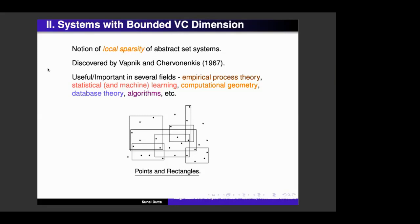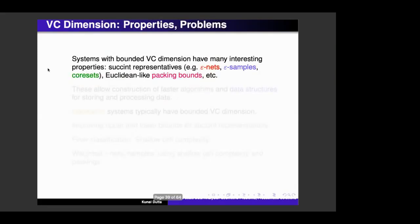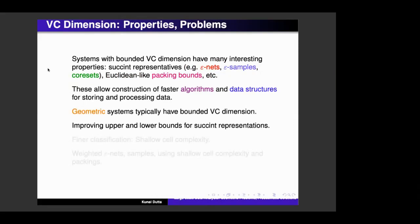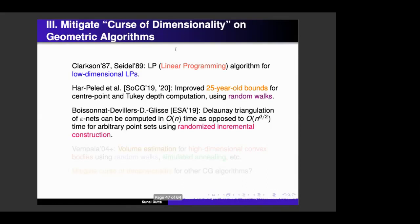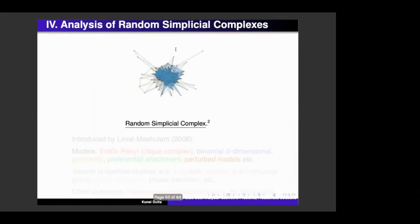Then there are a few other directions like systems with bounded VC dimensions. Okay, so there are several other directions, like for systems of bounded VC dimension, here again, there are several questions that one can ask, so I don't have time, I guess. Then, but yes, so geometric systems typically have bounded VC dimension, and there are several interesting questions that can be asked there. And the third aspect is about mitigating the curse of dimensionality on geometric algorithms, and finally, the one where I mentioned about typical data sets.